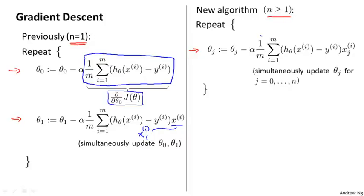And maybe for those of you that know calculus, if you take the definition of the cost function and take the partial derivative of the cost function J with respect to the parameter theta j, you find that that partial derivative is exactly that term that I've just drawn the blue box around. And if you implement this, you will get a working implementation of gradient descent for multivariate linear regression.